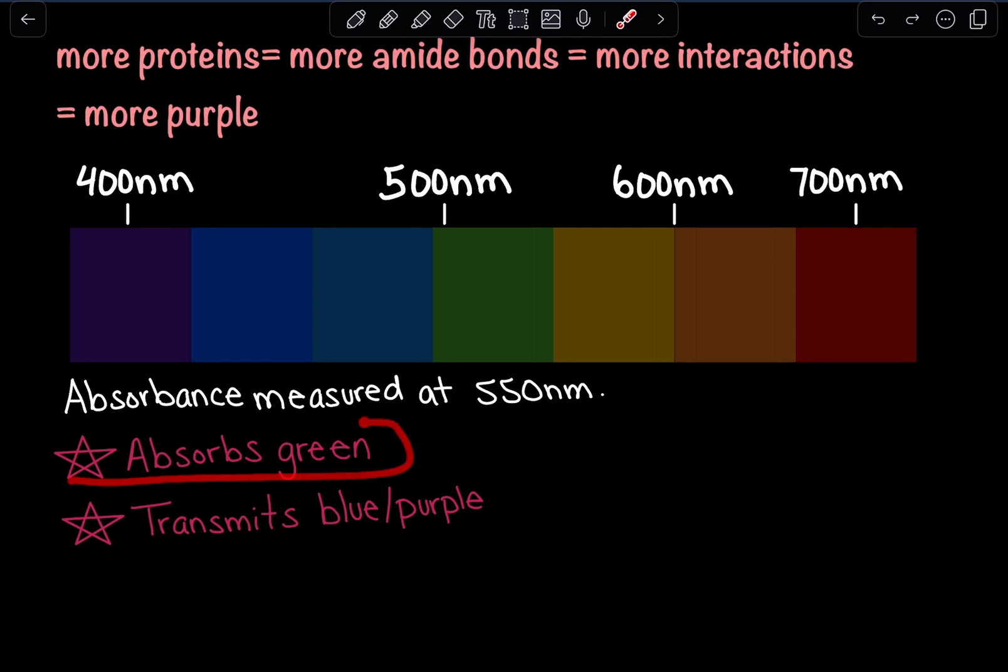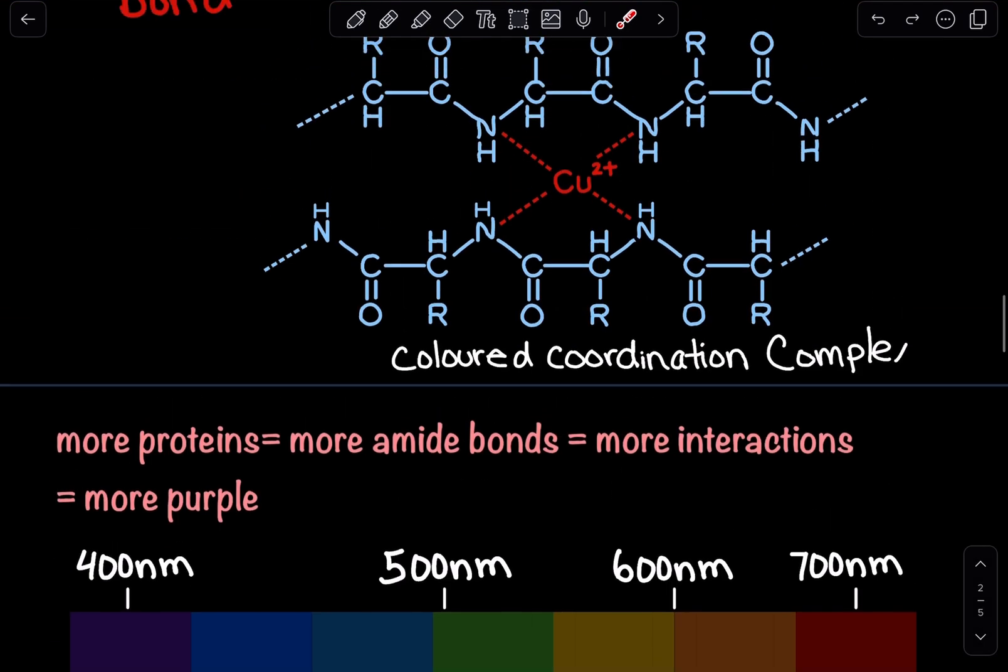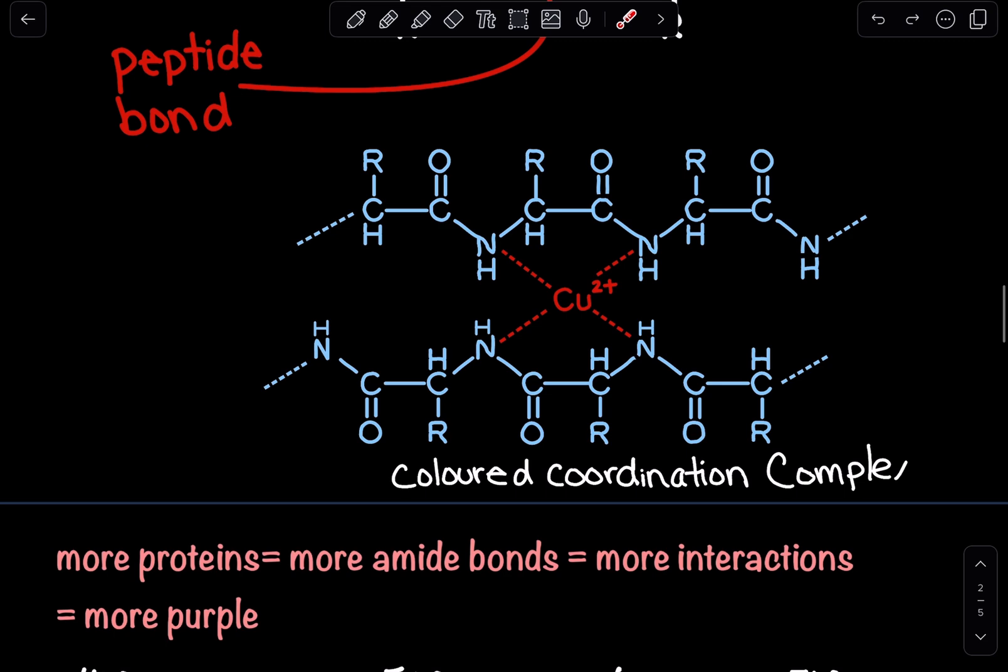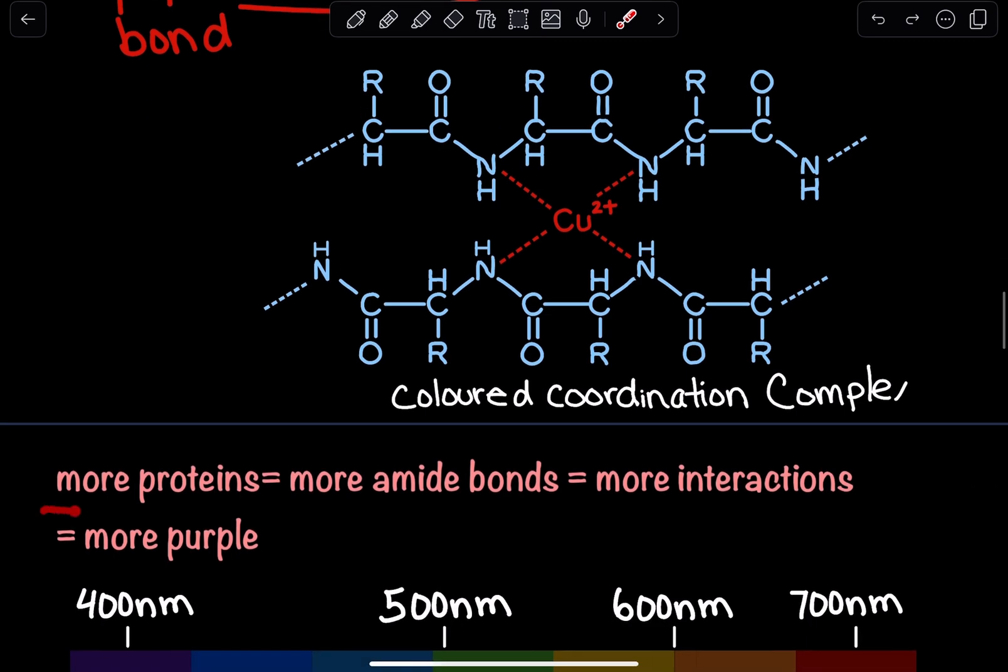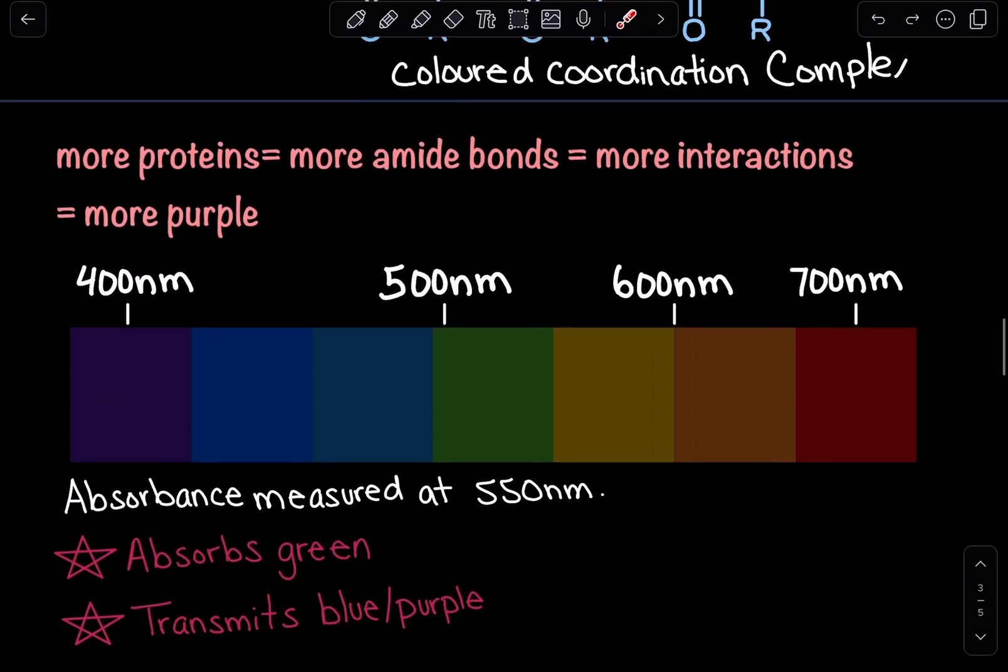It was absorbing green light and transmitting blue or purple light. This gave us a key insight into quantifying proteins because the more proteins that we have, the more amide bonds we'll have. We'll have more interactions, and the more interactions we have with that copper and the amide bonds, the more purple our sample will be, and the more absorbance we will see, giving us a higher absorbance value in our spectrophotometer.